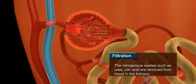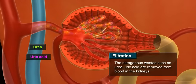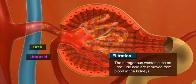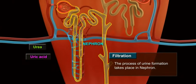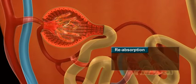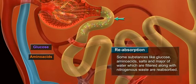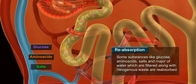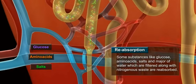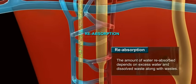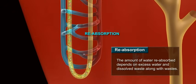Filtration: Nitrogenous wastes such as urea and uric acid are removed from the blood in the kidneys, and the process of urine formation takes place in the nephron. Reabsorption: Some substances like glucose, amino acids, salts, and a major amount of water which are filtered along with nitrogenous waste are reabsorbed. The amount of water reabsorbed depends on the excess water and dissolved waste present.